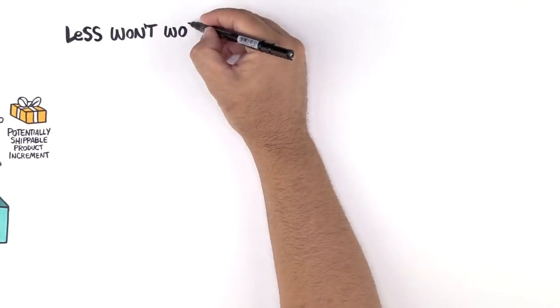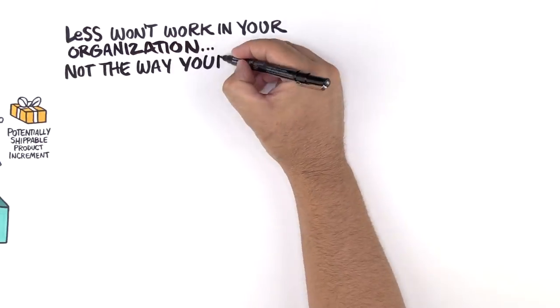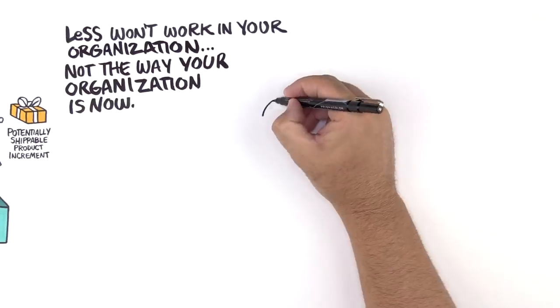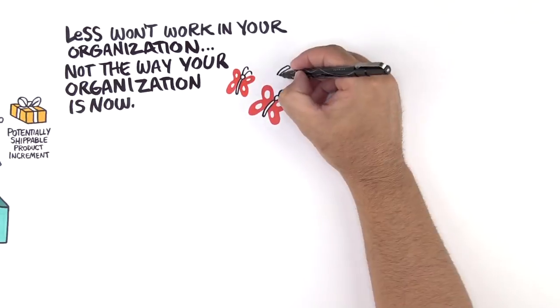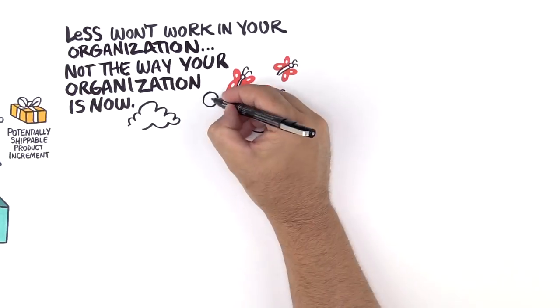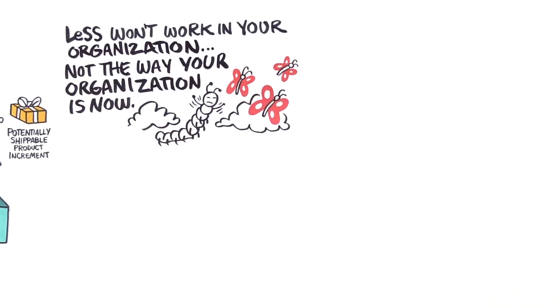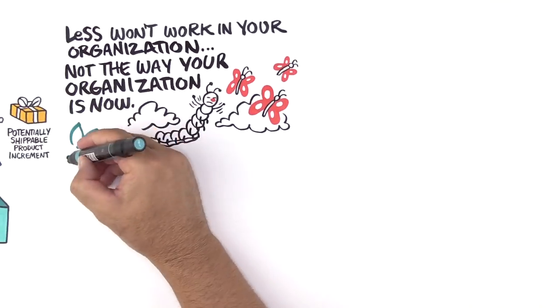But it won't work in your organization, not the way your organization is now. Your organization would have to change into one that allows it to work. This isn't quick or easy. You and your organization are currently designed to resist, undermine, and neutralize any steps towards real agility.